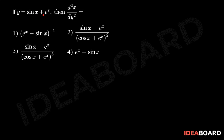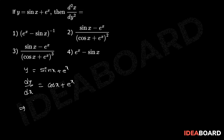If y equals sin x plus e power x, then find d square x by dy square. Given y equal to sin x plus e power x. Now dy by dx equals cos x plus e power x. That implies dx by dy equals 1 by cos x plus e power x.